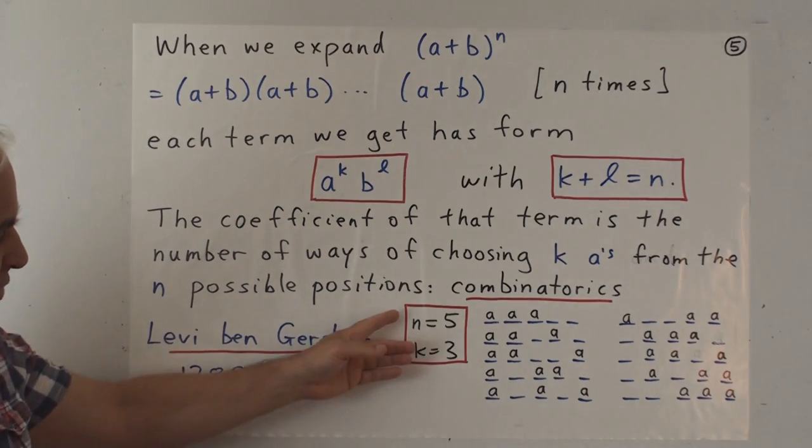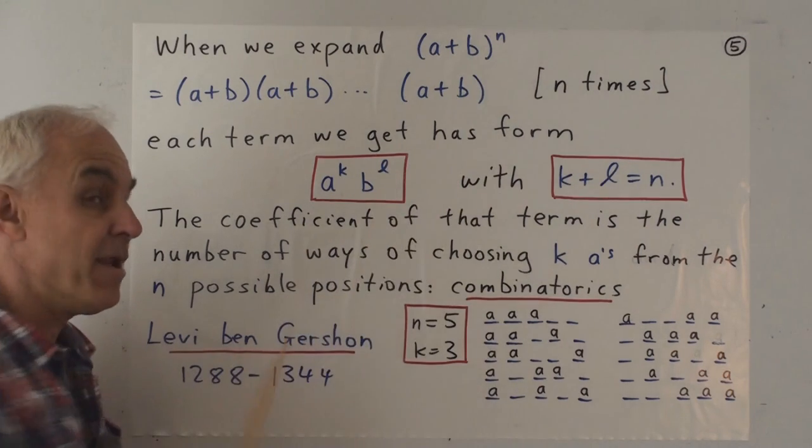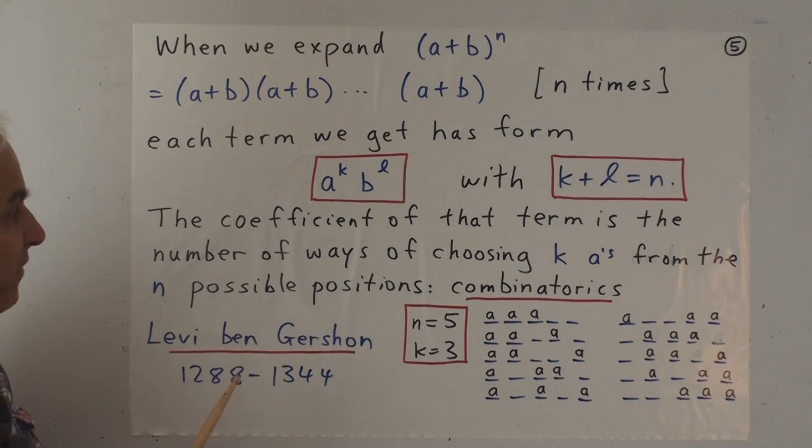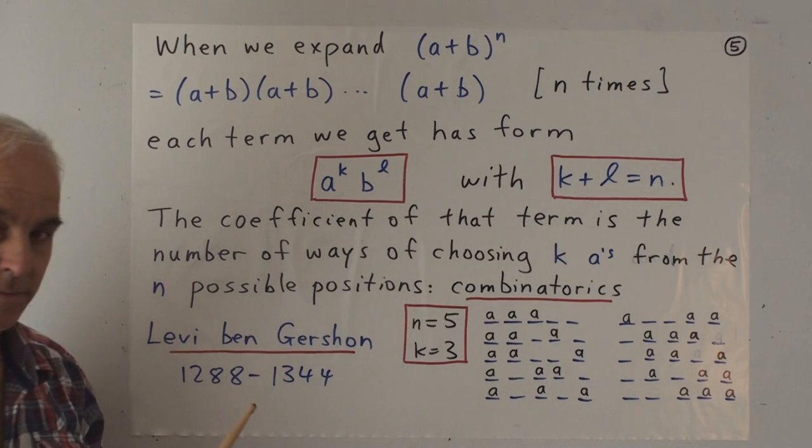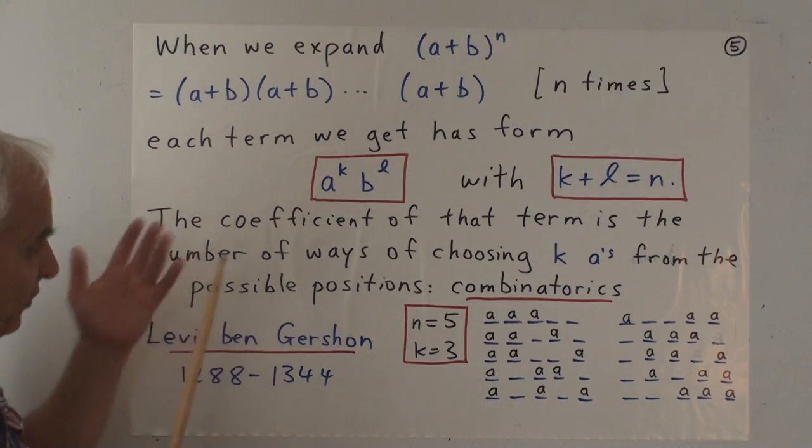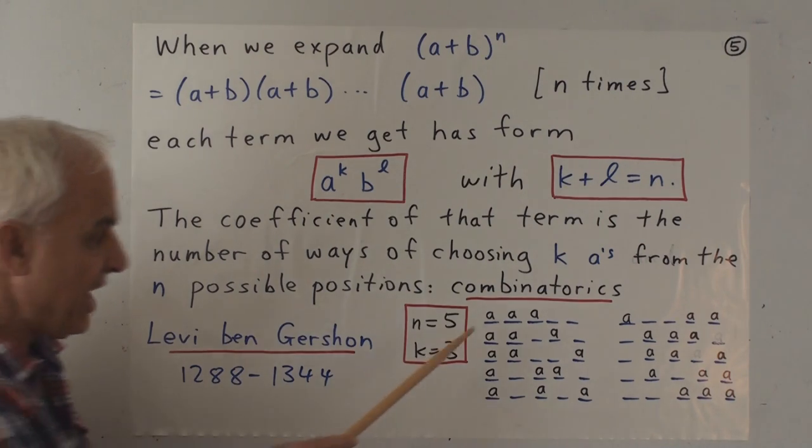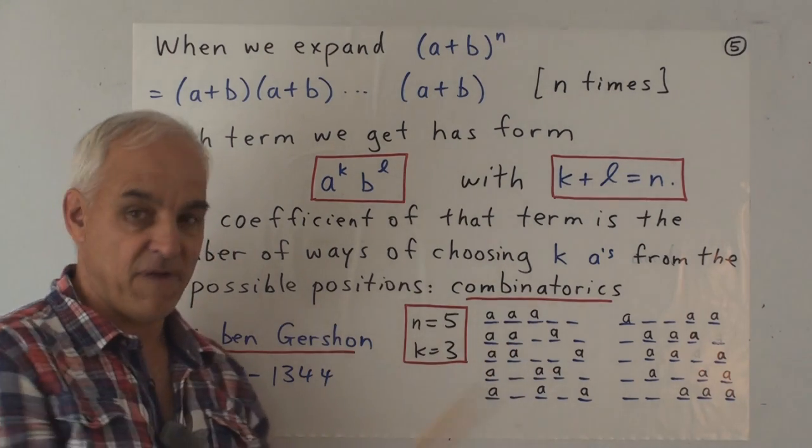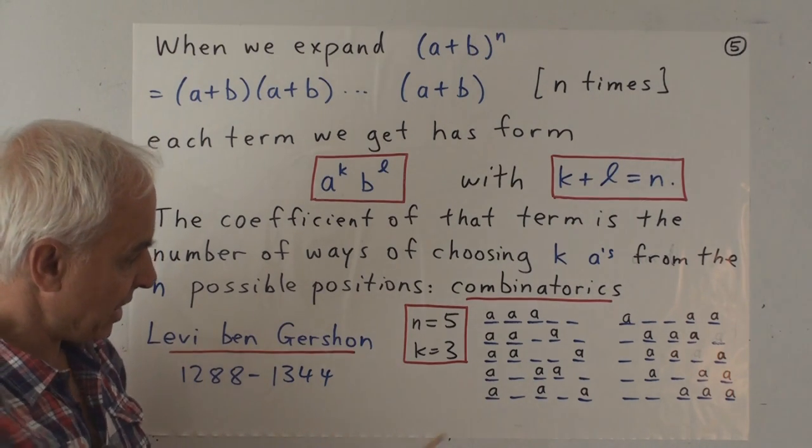So for example, suppose we're talking about n equals 5 and k equals 3. In other words, when we expand a plus b to the n, what would be the coefficient of a cubed b squared? Well, this would correspond to the number of ways of choosing 3 a's from 5 positions. And there are exactly 10 such ways, and here they are.